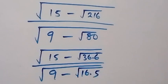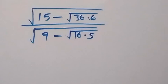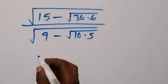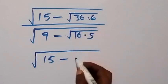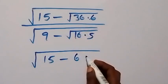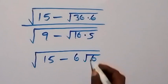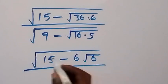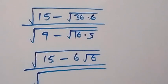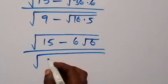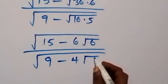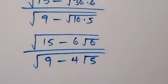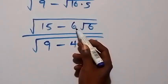So we have square root of 9 minus root 16 times 5. We can also separate root 36 times 6 and root 16 times 5 into two roots. We have square root of 15 minus root 36 times root 6, over square root of 9 minus root 16 times root 5.